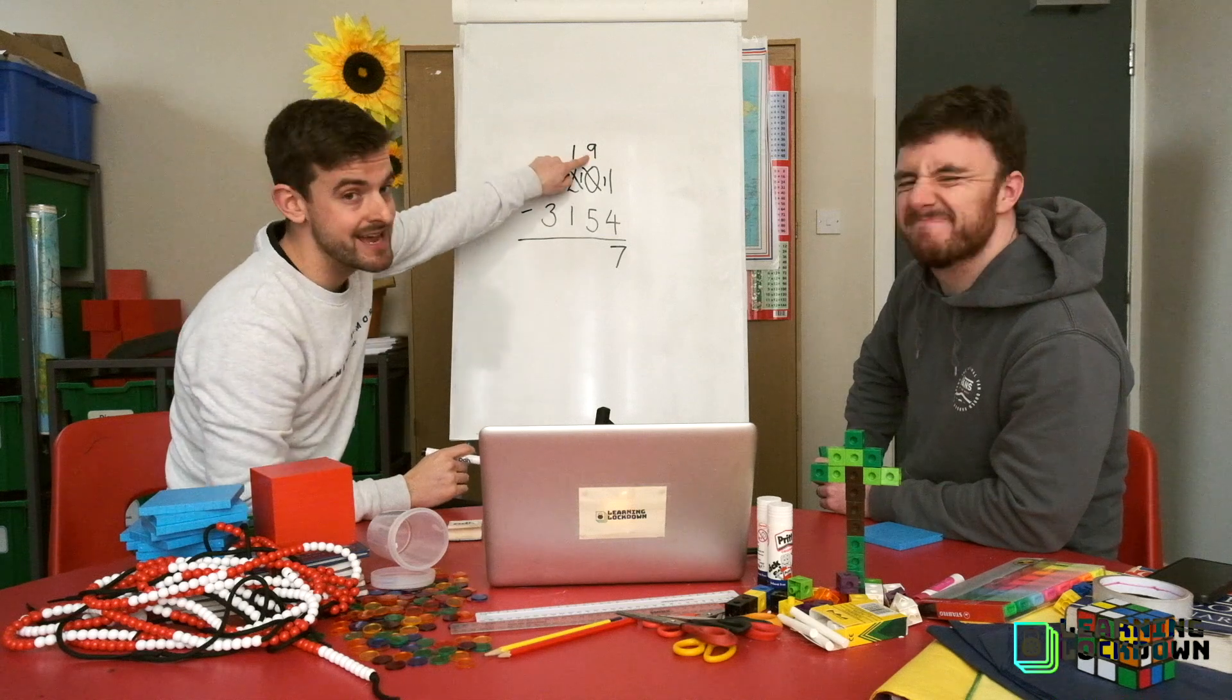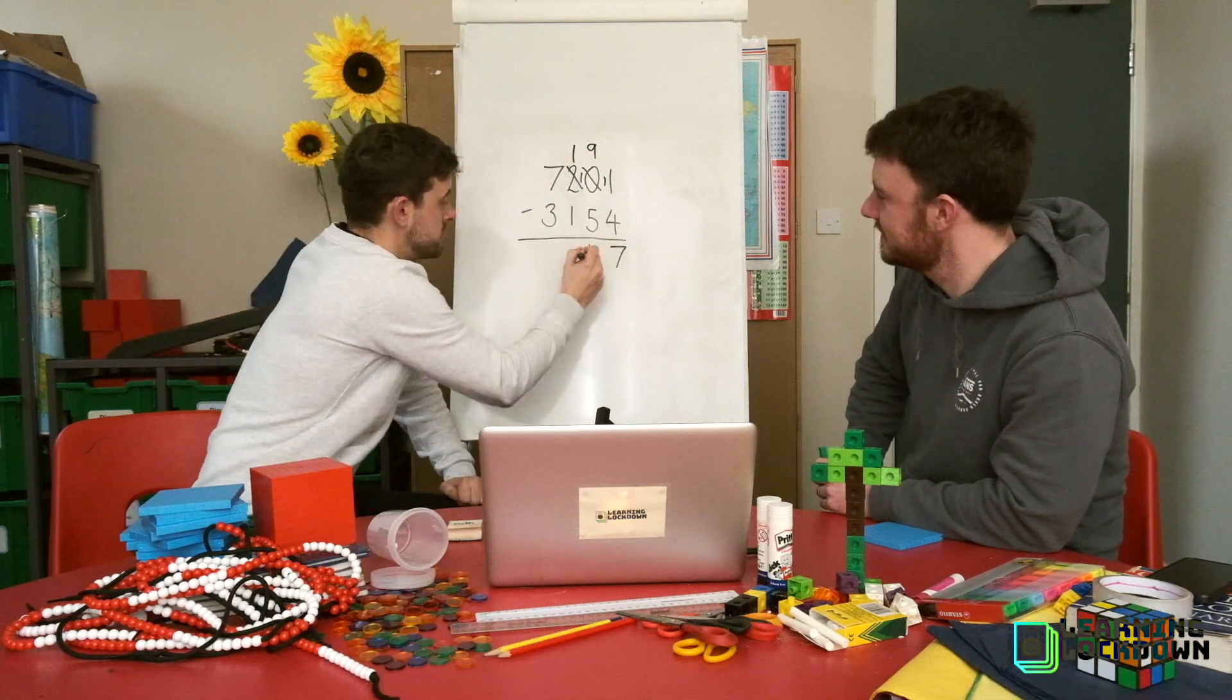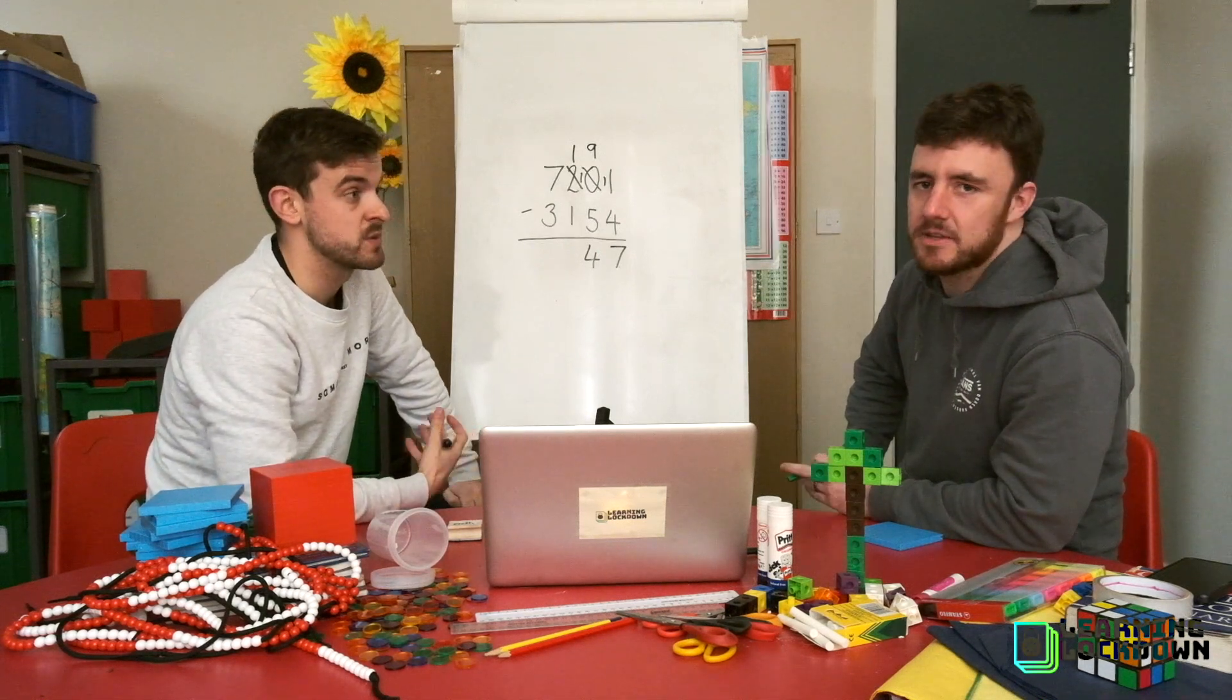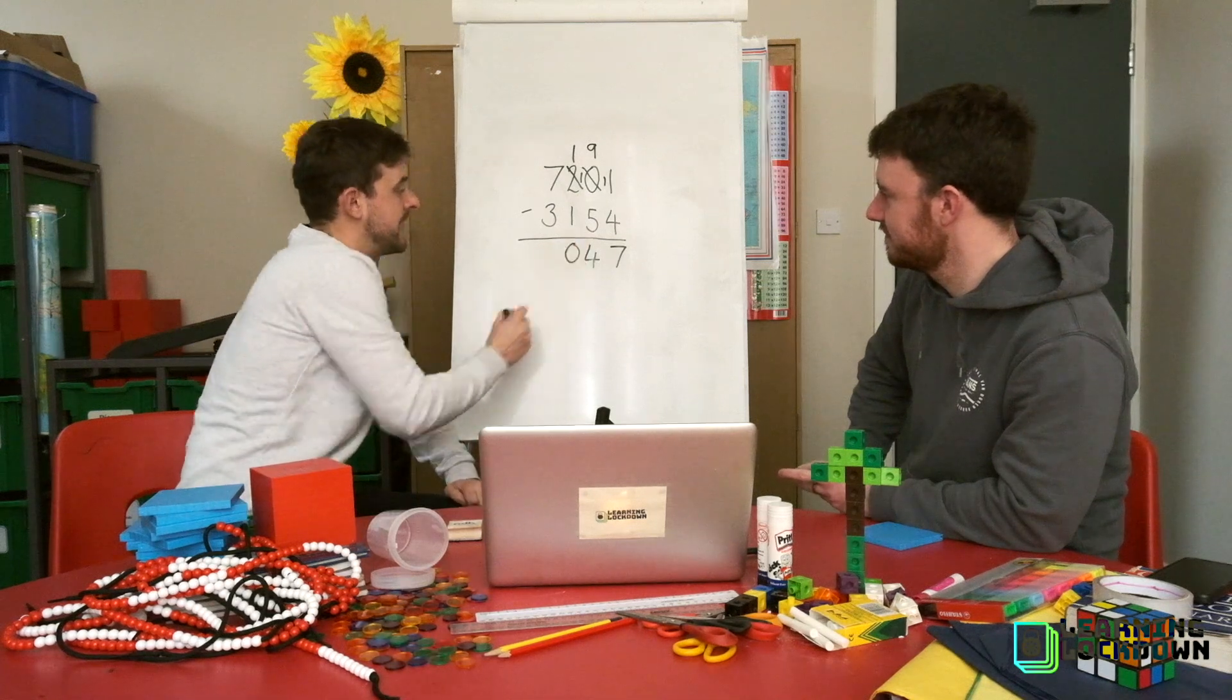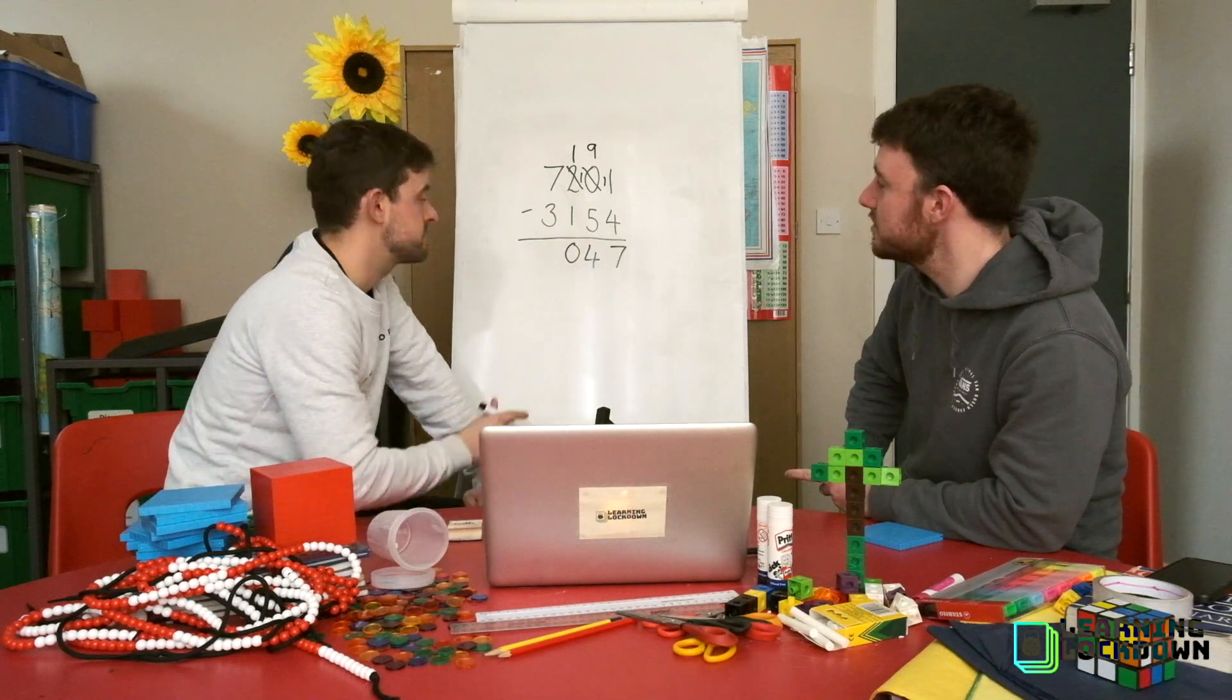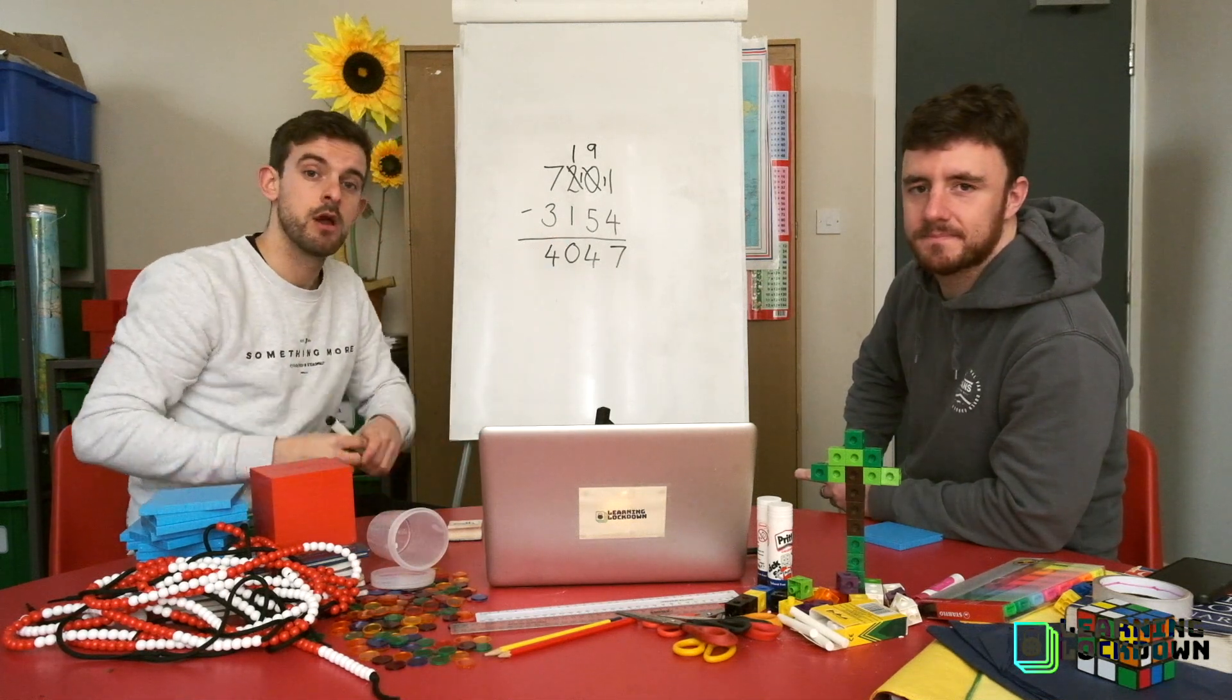Into our tens, well we've now got nine lots of ten. Nine take away five is four. Wow. Into our hundreds, one lots of hundreds take away one lots of hundreds would leave us with zero. Zero lots of hundreds. And into the thousands column, seven thousand take away three thousand is four thousand. That is level three. Off you go.